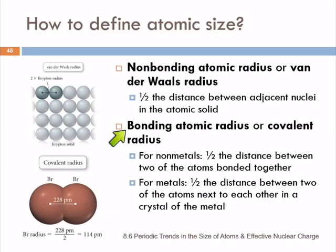We can also look at a bonding atomic radius, also called a covalent radius. For nonmetals, we're looking at half the distance between two of the atoms that are bonded together. This distance is going to be different than if you had an atomic solid, because the process of this bond forming pulls them closer. But the bromine, the distance between the two bromine atoms in a molecule is 228 picometers. You divide that in half, you get a bromine radius of 114.